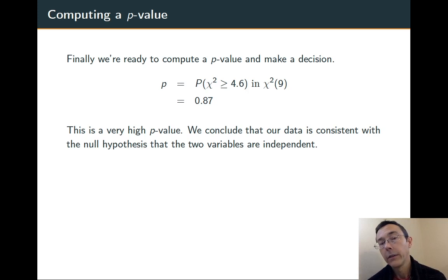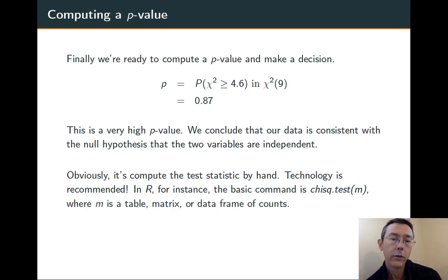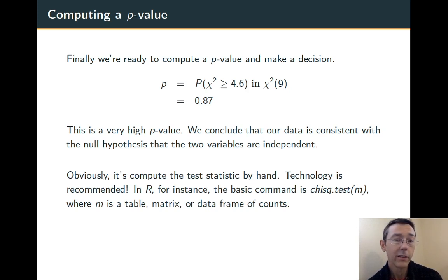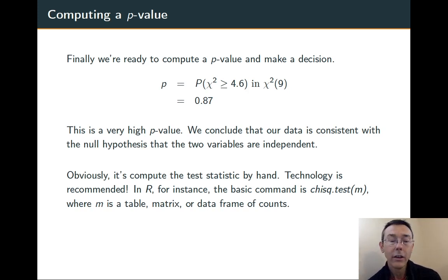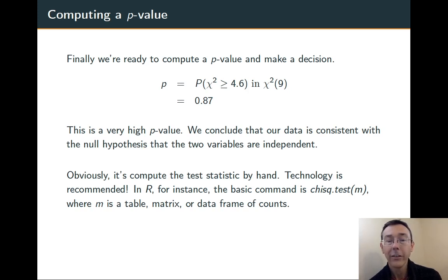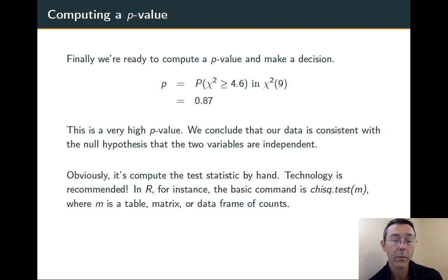Let's acknowledge that this arithmetic was nasty. We had to do a lot of different calculations just to get the expected cell counts, and then computing the chi-squared test statistic was a pain. Technology is recommended. In R, for example, the basic command is chisq.test, and you can feed it a table, matrix, or data frame of counts.